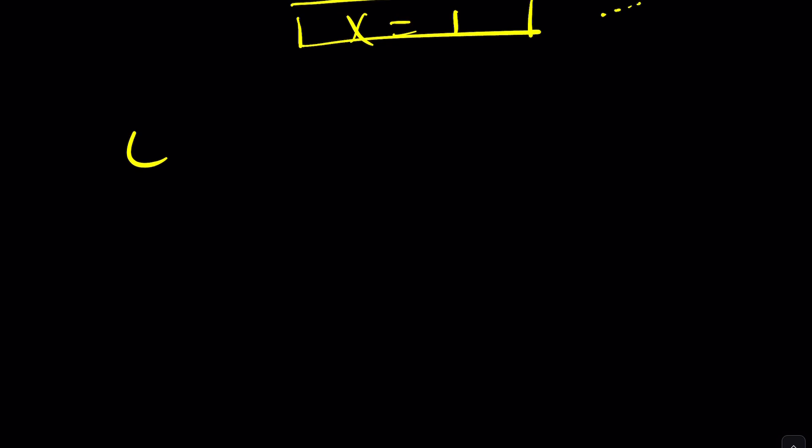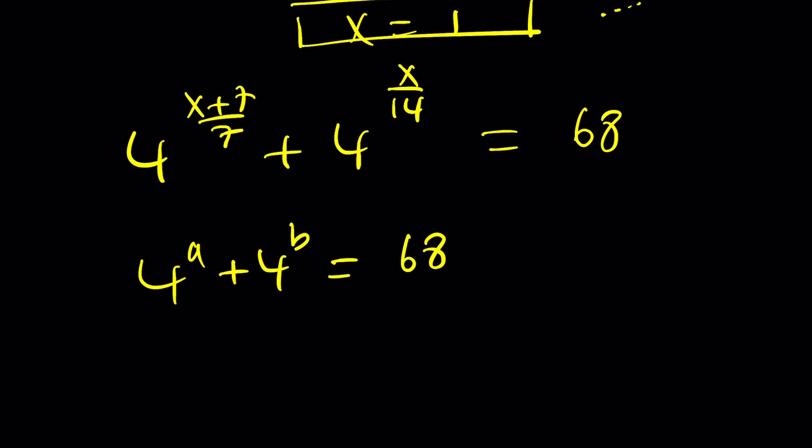So we have 4 to the power x plus 7 over 7 plus 4 to the power x over 14 equals 68. First of all, notice that the exponents are different. Even though they contain x, they are very much different. So how do you do this? Like, let's say you have an equation like 4 to the power a plus 4 to the power b equals 68. How do you solve these kinds of equations? Well, first of all, are a and b whole numbers, integers? Can they be fractions?